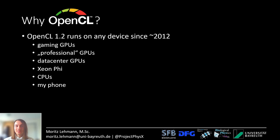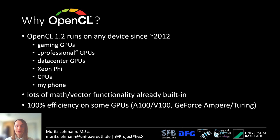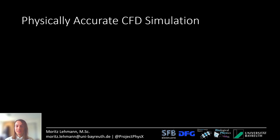Another reason is that there's lots of math and vector functionality already built into OpenCL, so it's quite a beautiful language to work with. And last but not least, the efficiency is excellent — on some of the newer GPUs I actually get 100% efficiency. This includes the NVIDIA A100 and V100, as well as some gaming GPUs from the Ampere and Turing generation.